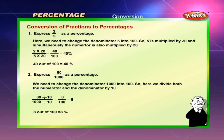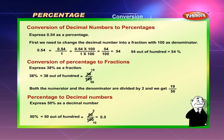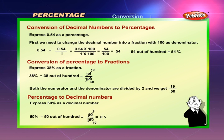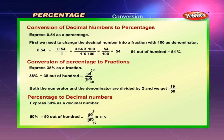Conversion of decimal numbers to percentages: express 0.54 as a percentage. First we need to change the decimal number into a fraction with 100 as denominator. 0.54 = 0.54/1 = (0.54 × 100) / (1 × 100) = 54/100, which is equal to 54%. 54 out of 100 is equal to 54%.